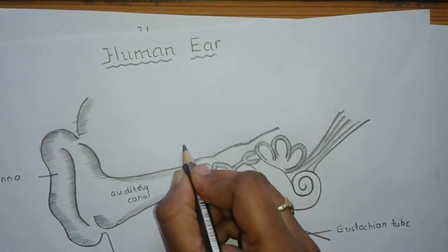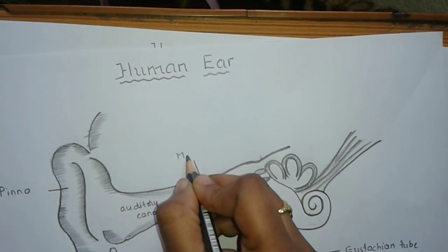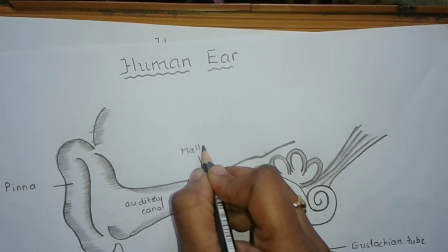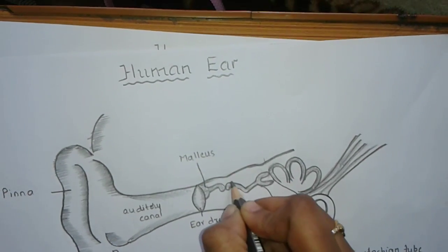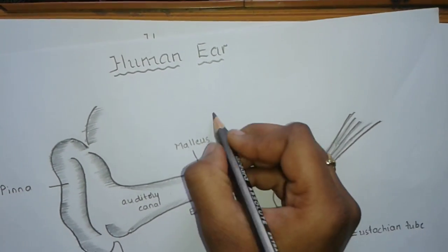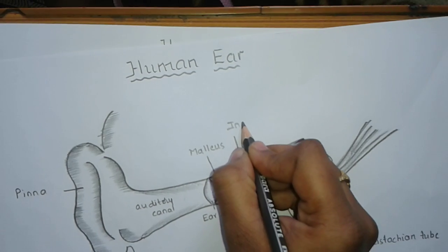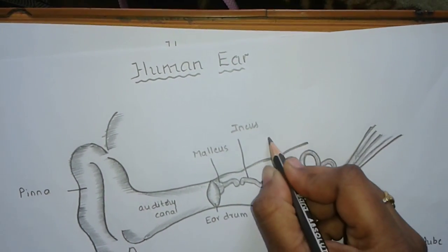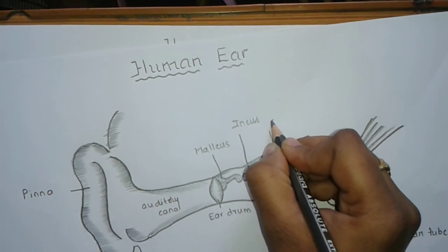The middle ear consists of three small bones. The first one is malleus. The second bone is called incus. The third bone is called stapes.